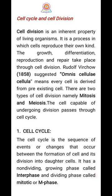Rudolf Virchow, in 1858, suggested 'omnis cellula e cellula,' that means every cell is derived from the pre-existing cell. There are two types of cell divisions, namely mitosis and meiosis.